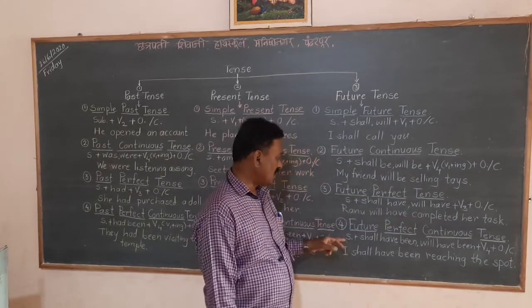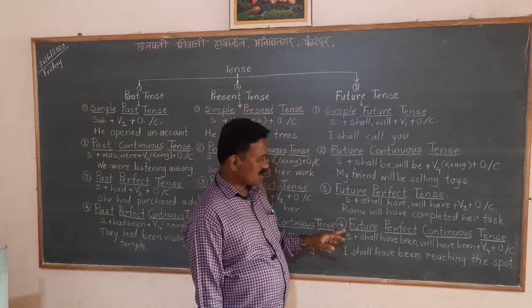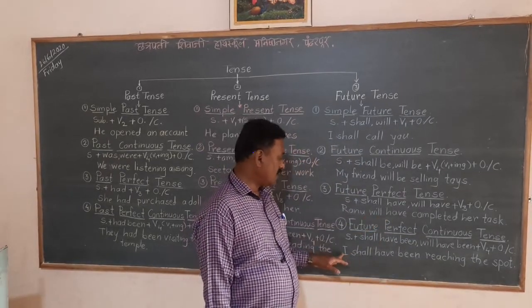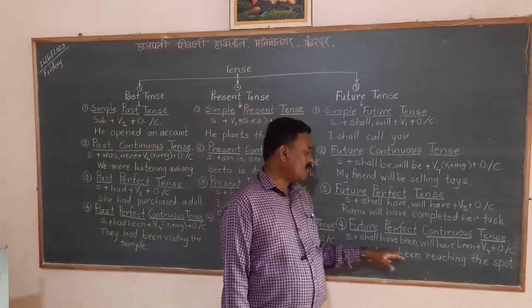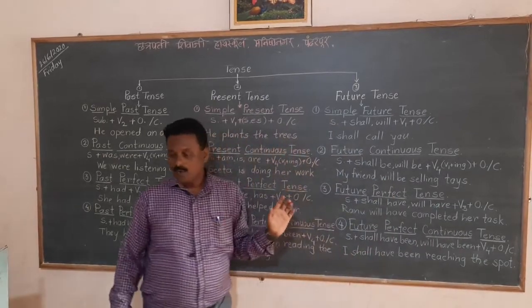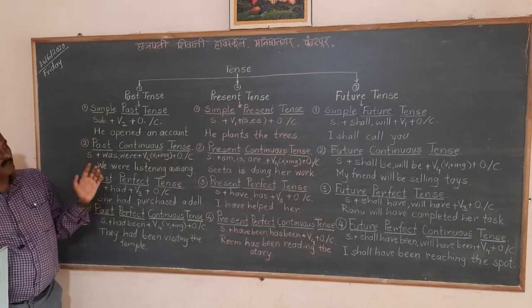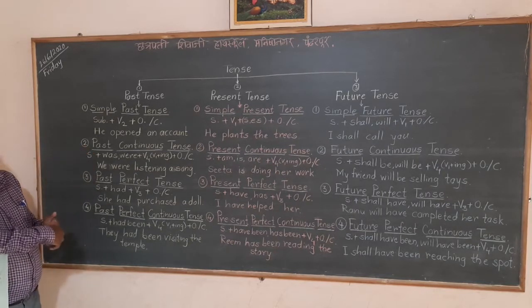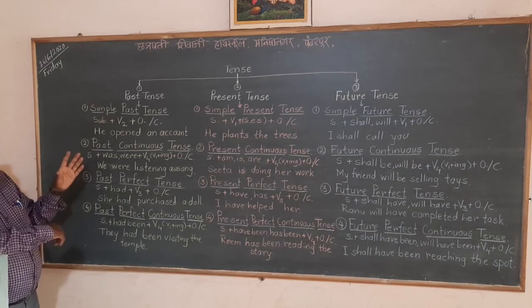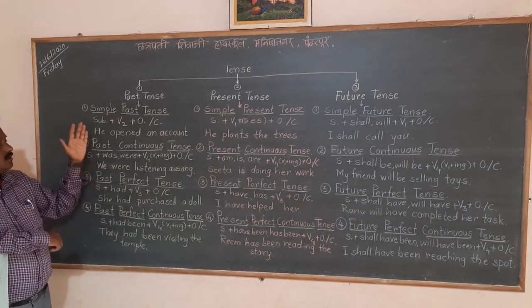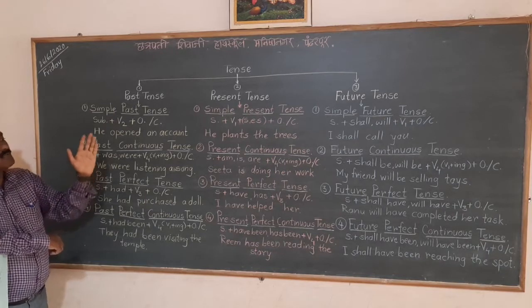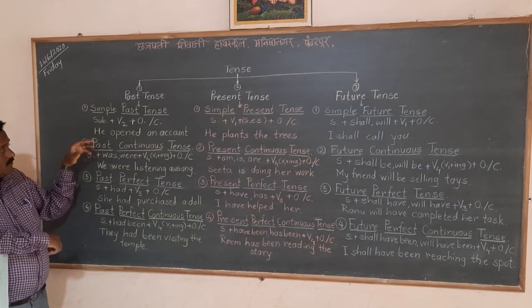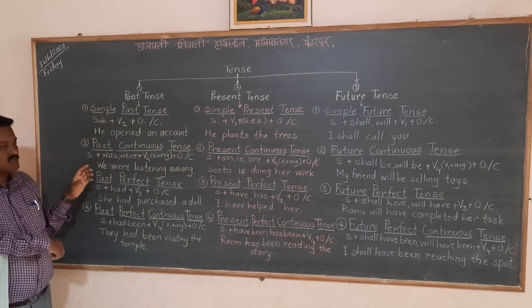The last tense is future perfect continuous tense. The formula or construction is subject plus shall have been/will have been plus V4 plus object or complement. Example: 'I shall have been reaching the spot.' In this way we can distribute tenses into 12 types. According to these formulas we can change sentences or change the tense of sentences. When we think about changing tenses, only the verbs change — not the subject, object, or complement.